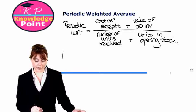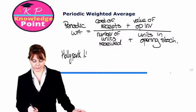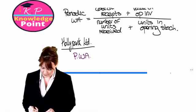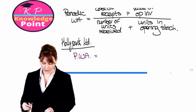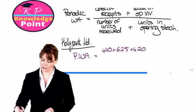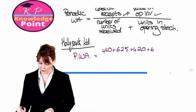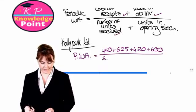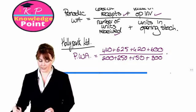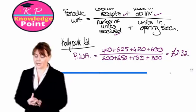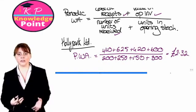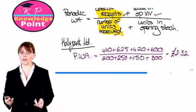Applying this to our Holly Park Limited exercise, we calculate the periodic weighted average. The total cost of all receipts is 440 plus 625 plus 420, plus the value of opening inventory of 600, divided by the number of units received — 200 plus 250 plus 150 — plus the opening stock of 300. This gives us a periodic weighted average of 2 pounds 32 pence. Remember, this can only be done at the end of the period, when we know our total receipts and their total cost.